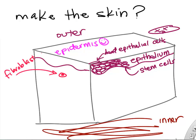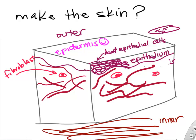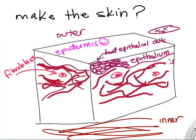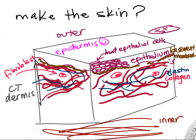Probably the thickest layer of your skin is connective tissue, underneath the epithelium. It helps hold the epithelium to the rest of your body. We have lots and lots of collagen fibers, a basement membrane to hold the epithelial cells to the connective tissue, and elastin and collagen to make your skin flexible and strong. We call that thickest connective tissue layer of the skin the dermis.